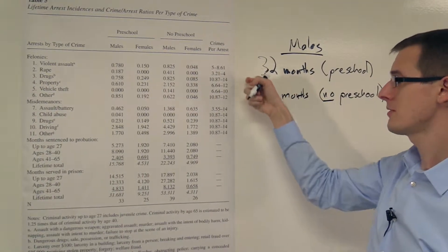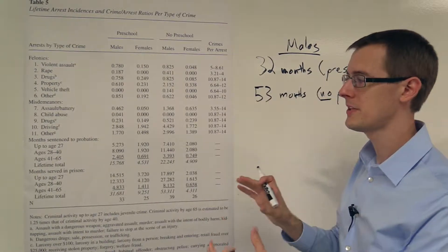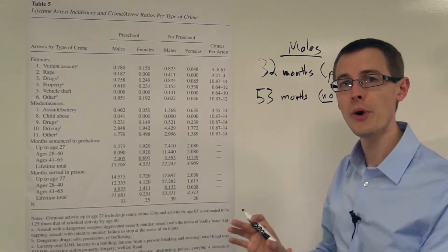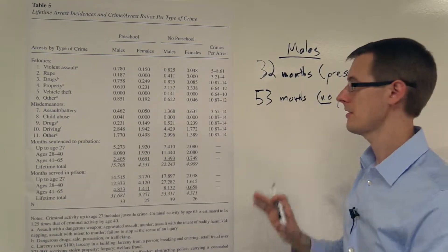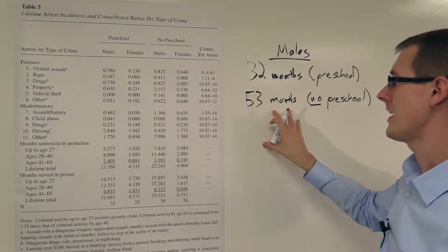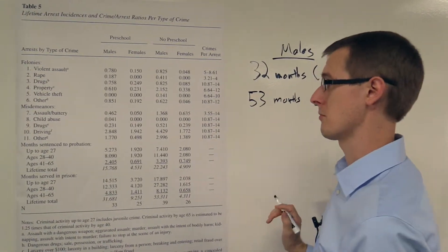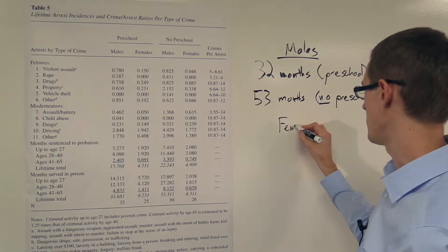And by the way, both of these numbers are quite large, and that's because the students were pulled from a specific population of students, low-income, high-risk students. So this is a nice finding. Going to preschool looks like it decreases lifetime months served in prison. Let's look at females.